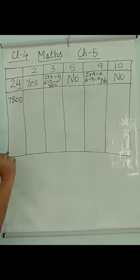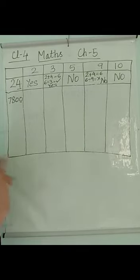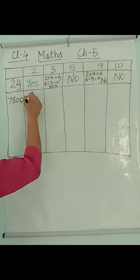For 2, check the ones place. Ones place should have 0, 2, 4, 6, or 8. There is 0. So yes.